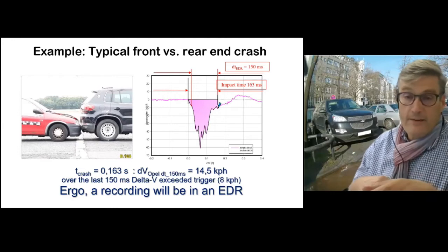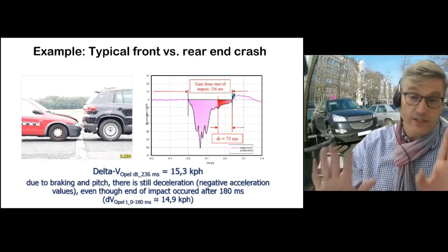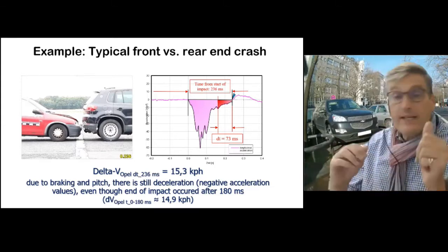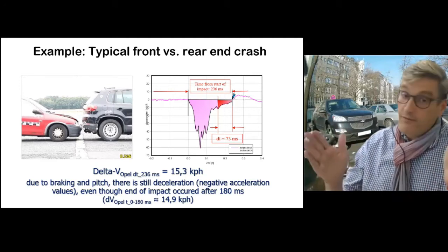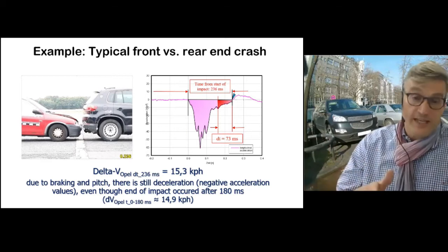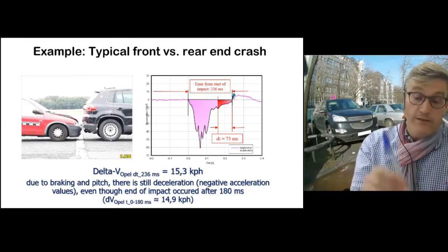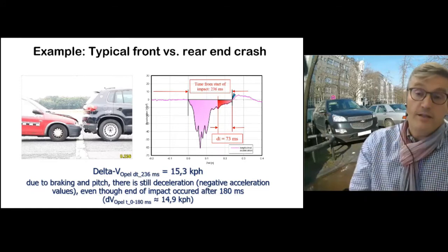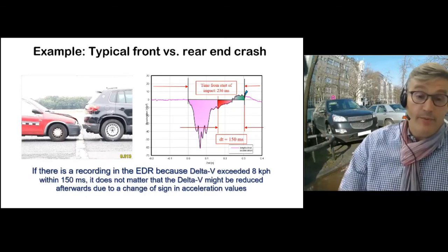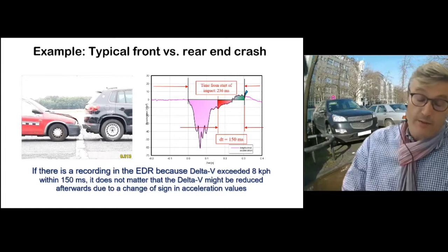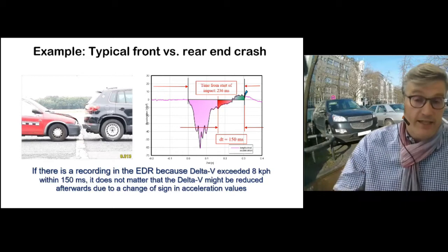Once the data storage is triggered, it stores data over a period of 250 milliseconds after the impact and five seconds before the impact. It doesn't matter what the sensor detects afterward — once the delta V has exceeded 8 kph, the saving is triggered and the data recorded over that 250-millisecond window is preserved.